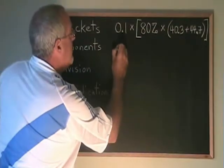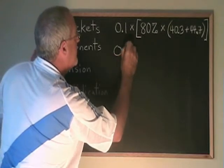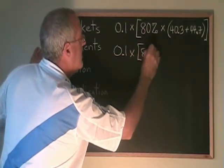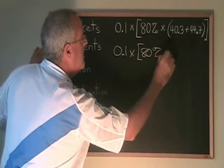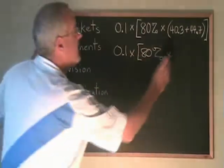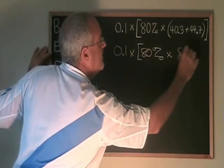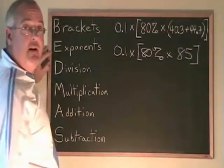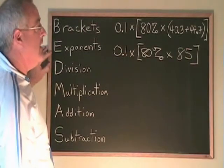Writing down the rest of the question, 40.3 plus 44.7 is equal to 85. The round bracket is solved and I don't need it anymore.